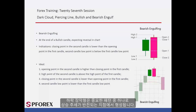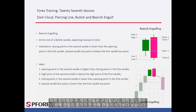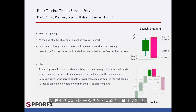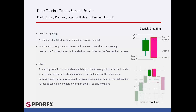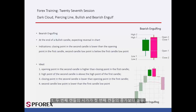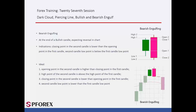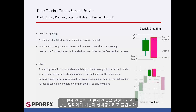Bearish engulfing is an important candle pattern that forms at the reversal point of an uptrend. It consists of two candles, in which the close price of the second candle is lower than the open price of the first candle, and the low of the second candle must be lower than the low of the first candle. The ideal conditions are: (1) open price of the second candle is higher than the close of the first; (2) high of the second candle is above the high of the first; (3) close of the second is below the open of the first; and (4) low of the second is lower than the low of the first. The second candle covers all price points of the first candle, hence why it is called engulfing.